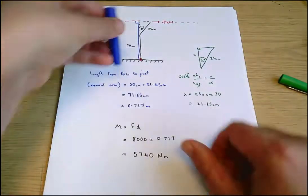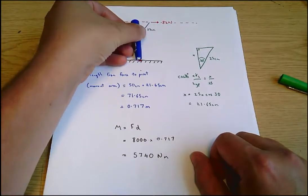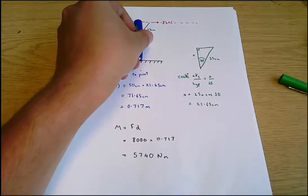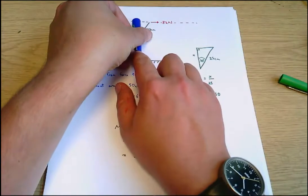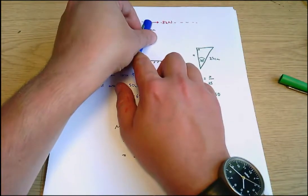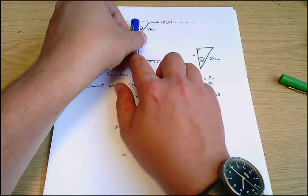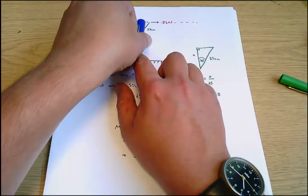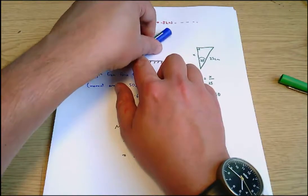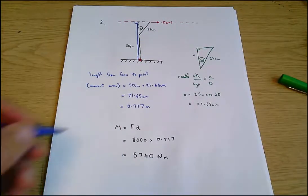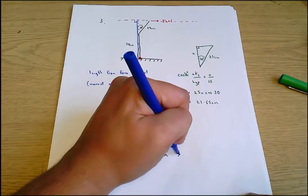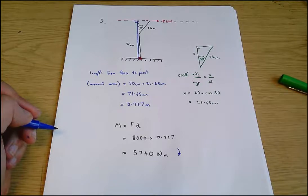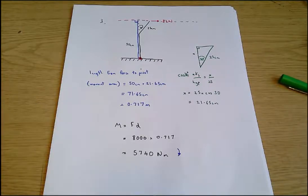Checking the direction: if I fix my pen lid at the pivot and see what effect this force would have, it's going to turn it in a clockwise direction — from noon around to one o'clock, two o'clock, etc. So that is a clockwise moment and we'll leave it as positive. That's question three complete.